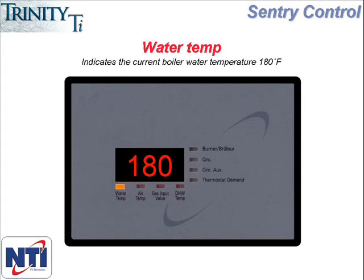The black area in the middle of the controller is the display area. When the boiler is in regular operating mode, the display is constantly cycling through three numbers, and each number on the display corresponds to the indicator light below that is lit when the number is being displayed. The first example is displaying a number of 180, and the indicator light below that is lit is water temperature. This means the controller is measuring a water temperature at the boiler outlet of 180 degrees, and this number is constantly being updated as the boiler water temperature changes.